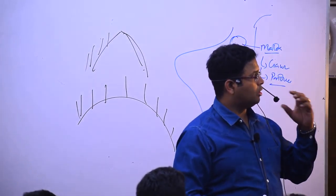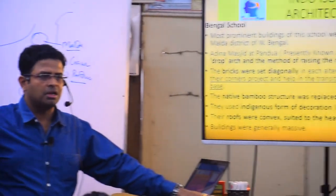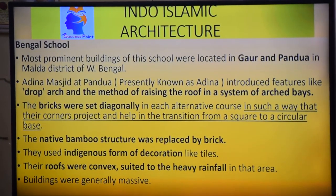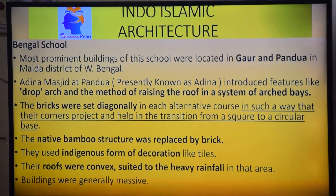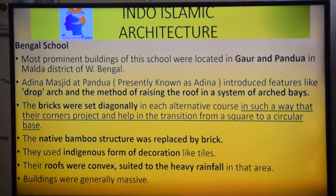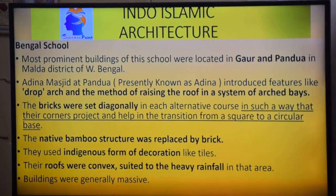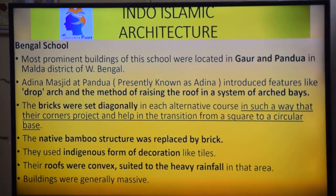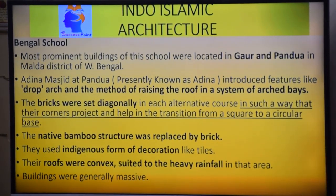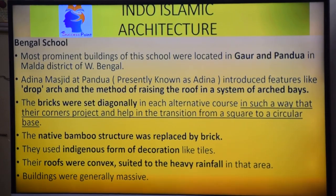The native bamboo structure was replaced by brick. When you make it from bamboo, if you pull two bamboos and then it will become like what? Arch or drop arch? Drop arch. So the bamboos are replaced by brick. They used indigenous form of decoration like tiles. The river deltaic regions have clay, deltaic regions have finer soil, and this finer soil can be easily converted by burning into tiles. And their roofs were convex, suited to the heavy rainfall in that area.